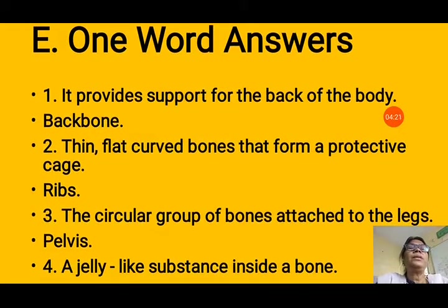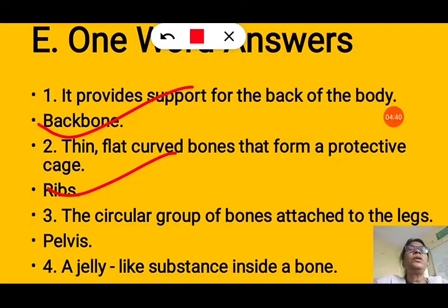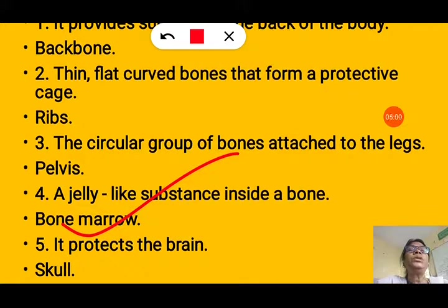Exercise E — One word answers. 1: It supports the back of the body — backbone. 2: The thin flat curved bones that form a protective cage — ribs; there are 24 ribs in our rib cage. 3: The circular group of bones attached to the legs — pelvis. 4: A jelly-like substance inside the bone — bone marrow; it produces new blood cells. 5: It protects the brain — skull.